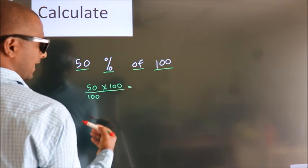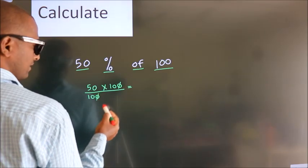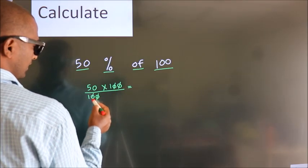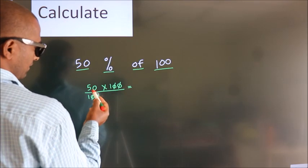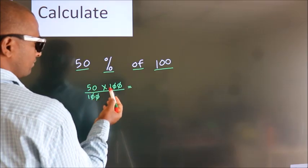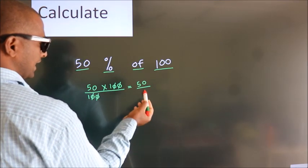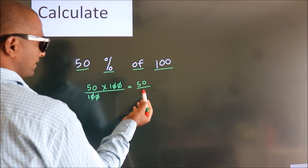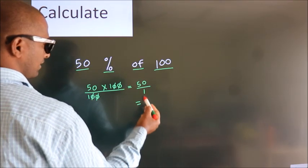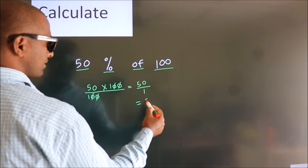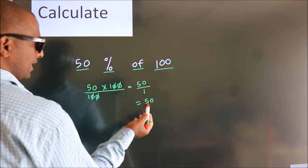I cancel this 0 with this 0. 50 into 1. In the denominator, 1. 50 by 1 is 50. This is our answer.